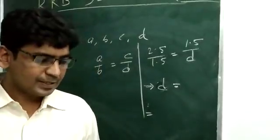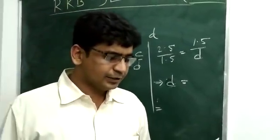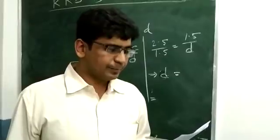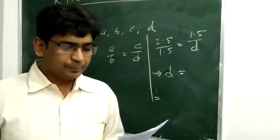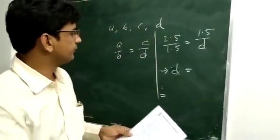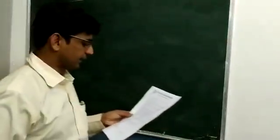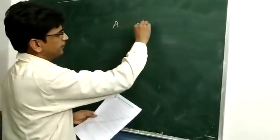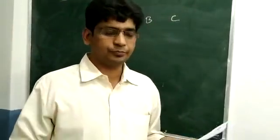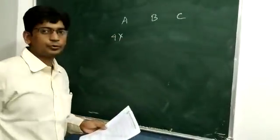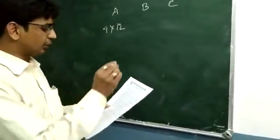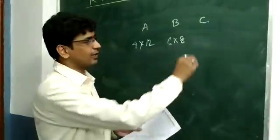Problem number 3: A started a business. After 4 months from the start of the business, B and C joined him. The ratio of the investment of A, B, and C was 4 is to 6 is to 5. A's time is 12 months, B and C joined after 4 months so their time is 8 months.